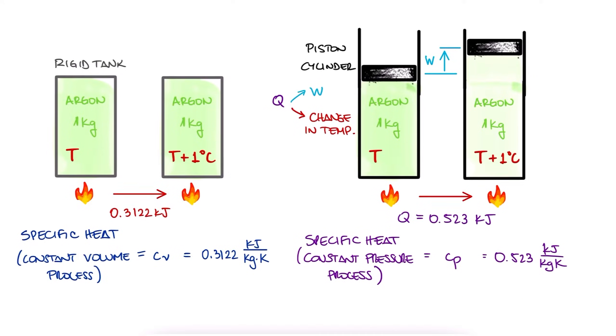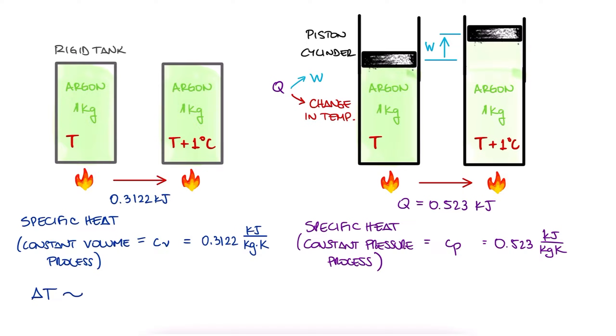We know that for a change of temperature of a substance, we would be looking at the difference of specific internal energy for a constant volume process, like this rigid tank, and we would be looking at the difference of specific enthalpy for a constant pressure process, like the piston cylinder system. Remember that enthalpy is equal to internal energy plus p times v.